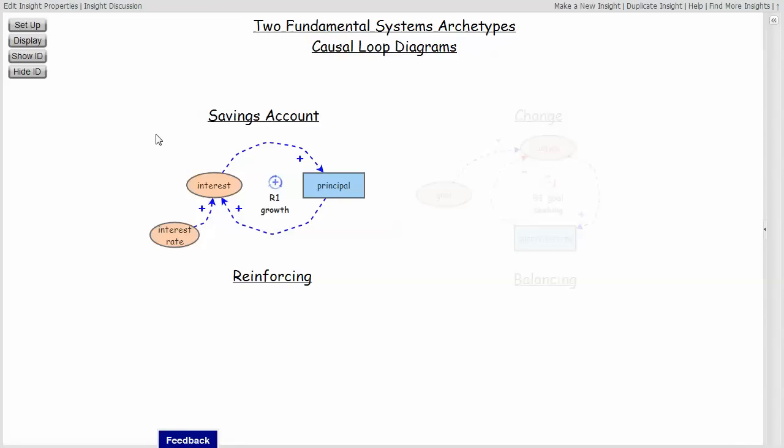The other fundamental archetype is a change structure where there is some current state which is different from the goal, and the two interact to provide the impetus for action, action intended to move the current state in the direction of the desired state. This creates a balancing structure or balancing loop.